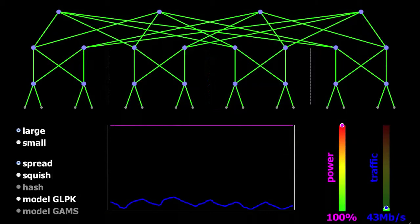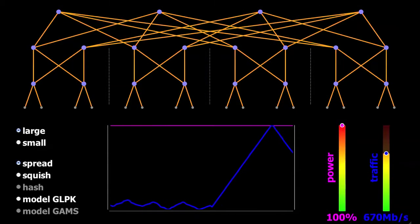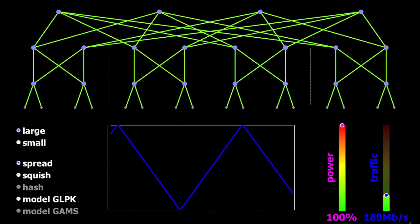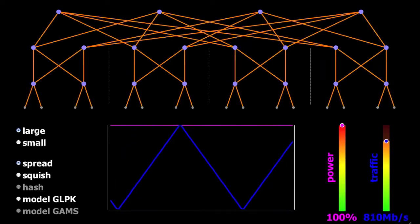The top half shows a data center network, where each large dot is a switch with 4 ports and individual servers are the small dots. The bottom graph shows total network power in purple, and the traffic demand is in blue.